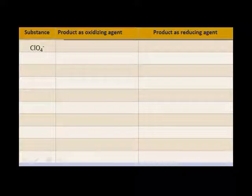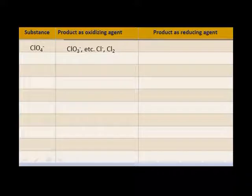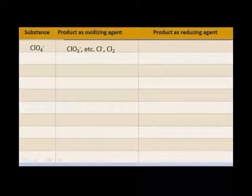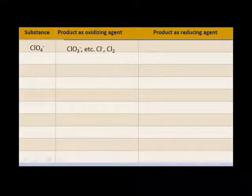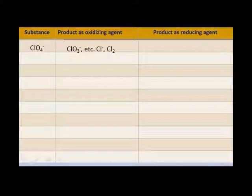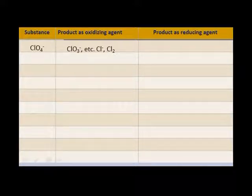The chlorine can gain electrons and it can change to the chlorate radical, the chloride radical, the hypochlorite radical, chloride, or chlorine — there are a lot of things it can change to. Can the ClO₄⁻, the perchlorate radical, act as a reducing agent? In other words, can it lose more electrons? Don't count oxygen. The answer is no — nothing that we would recognize.